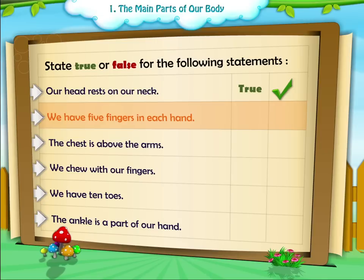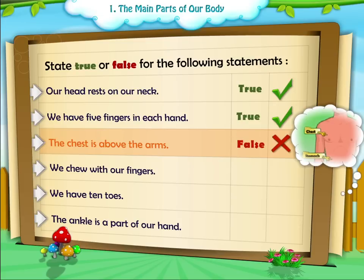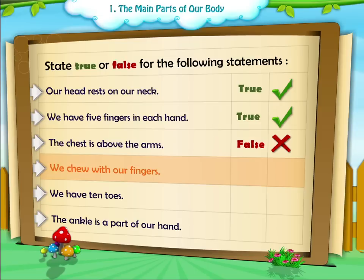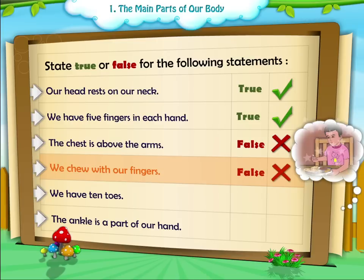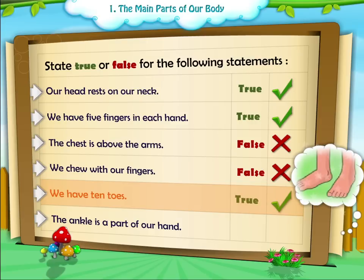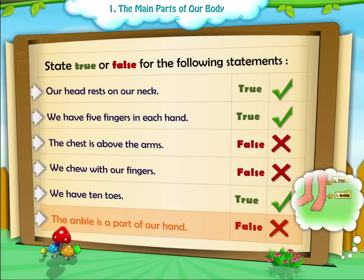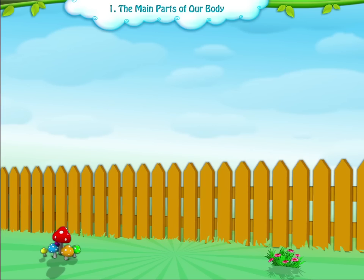True or False. We have five fingers in each hand — True. The chest is above the arms — False. We chew with our fingers — False. We have ten toes — True. The ankle is a part of our hand — False.